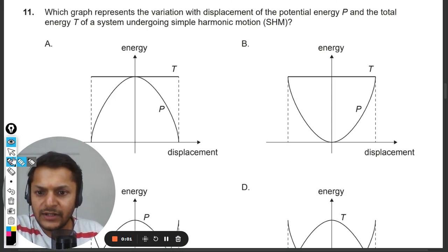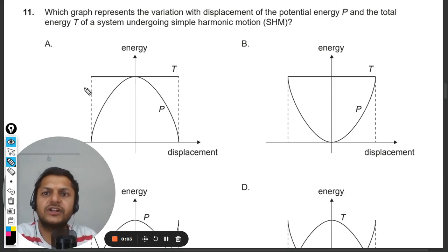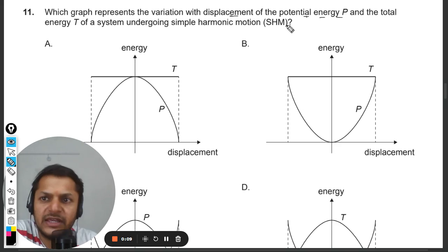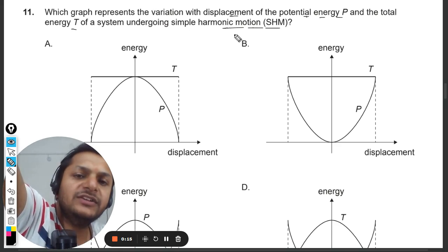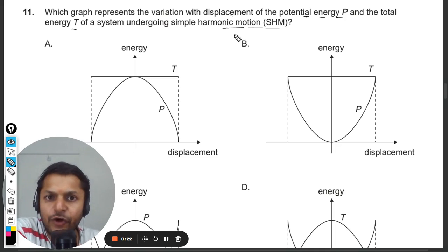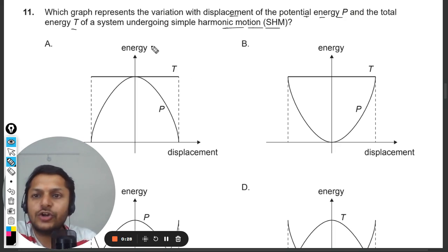Okay dear students, let us see what is there in this question. Which graph represents the variation with displacement of the potential energy P and the total energy T of the system undergoing simple harmonic motion? So my students, what is happening in this question is that we are considering a simple harmonic motion and you are supposed to draw the graph of the potential energy and the total energy with respect to displacement.